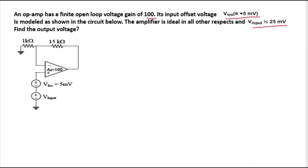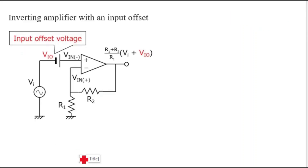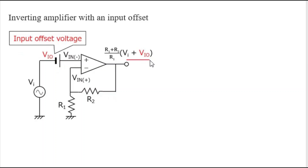I have taken an inverting amplifier as an example. Here you can see the V in plus terminal and V in minus terminal, and the input offset voltage VIO is given. At the output, the input offset voltage has been considered. This offset voltage occurs basically due to differences in input impedance and input bias current.